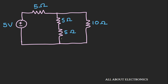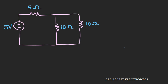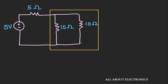If you look at the circuit, these two 5-ohm resistors are connected in a series combination. So we can replace these two resistors by their equivalent series resistance — let's call it Rs. Rs = 5 + 5 = 10 ohms. So now the circuit will look like this. In this equivalent circuit, these two 10-ohm resistors are connected in parallel.